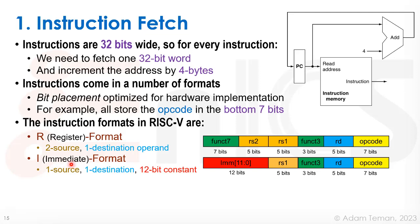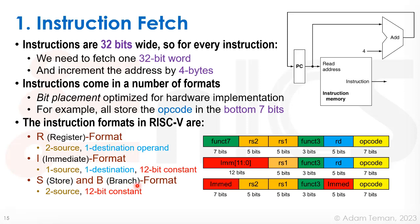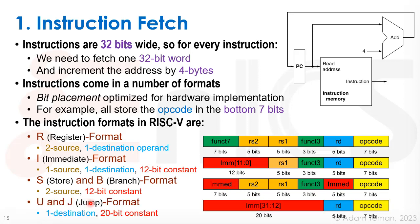The I-format is the immediate format and has one source register rs1 and one destination rd, using 12 bits for a constant called an immediate because it is immediately available within the instruction itself. The S and B formats are similar to each other: they have two source operands rs1 and rs2 but no destination, using 12 bits for an immediate. Finally, the U and J formats (J for jump) have only a destination and use 20 bits for an immediate.